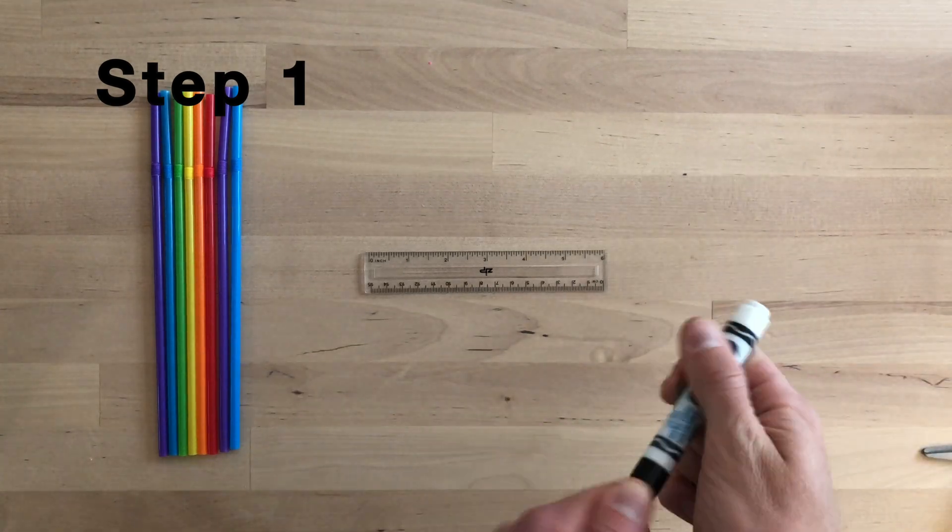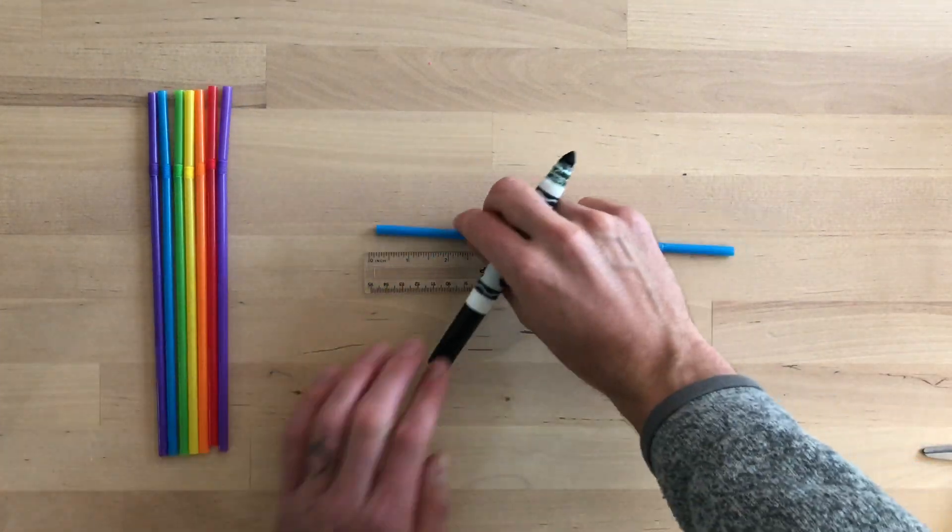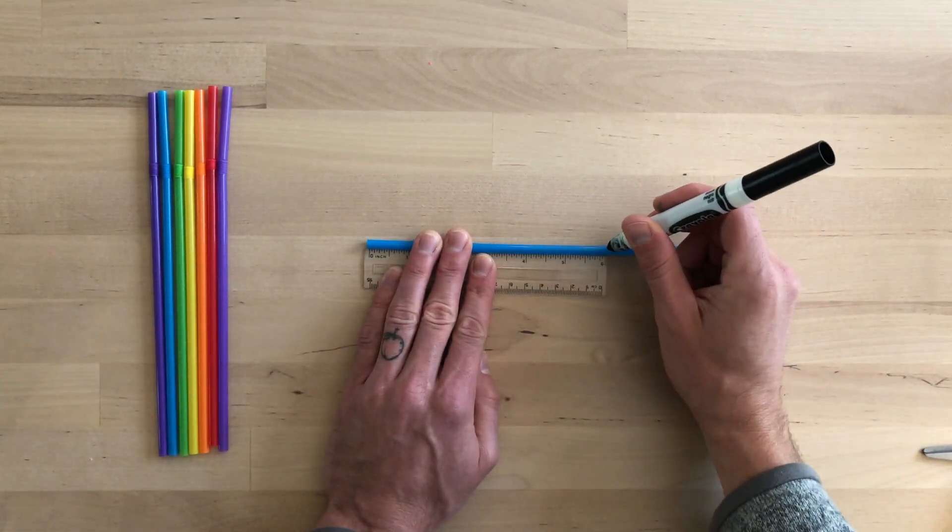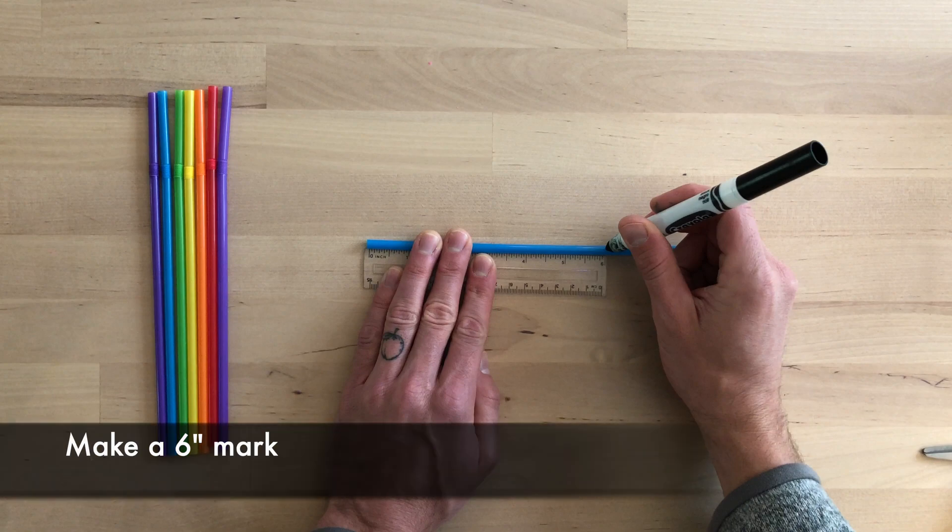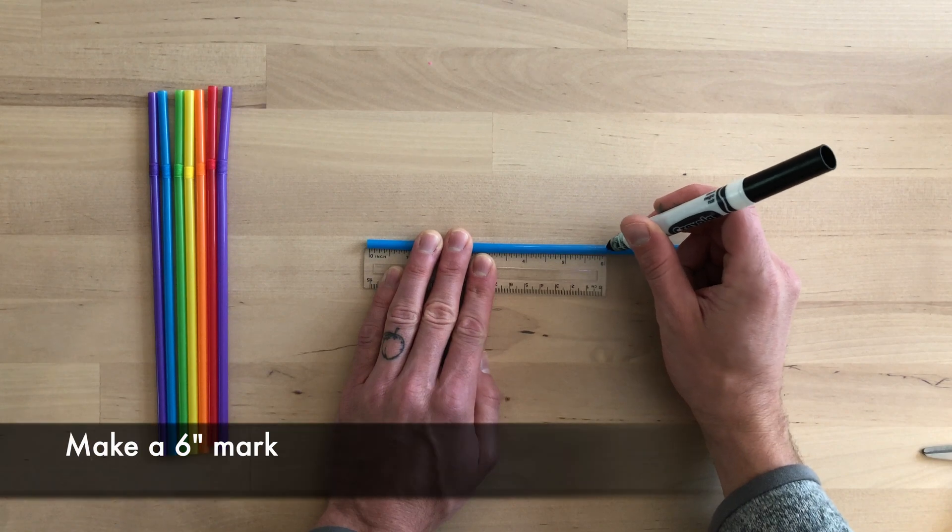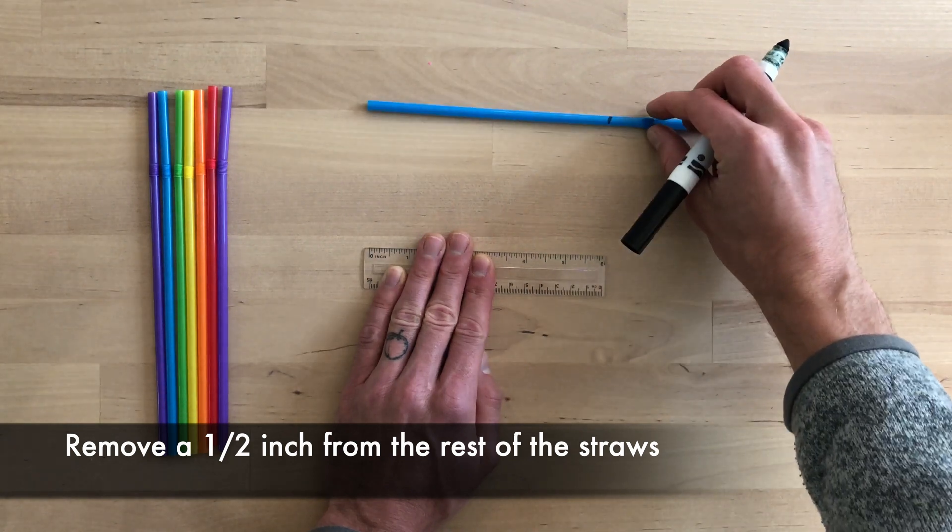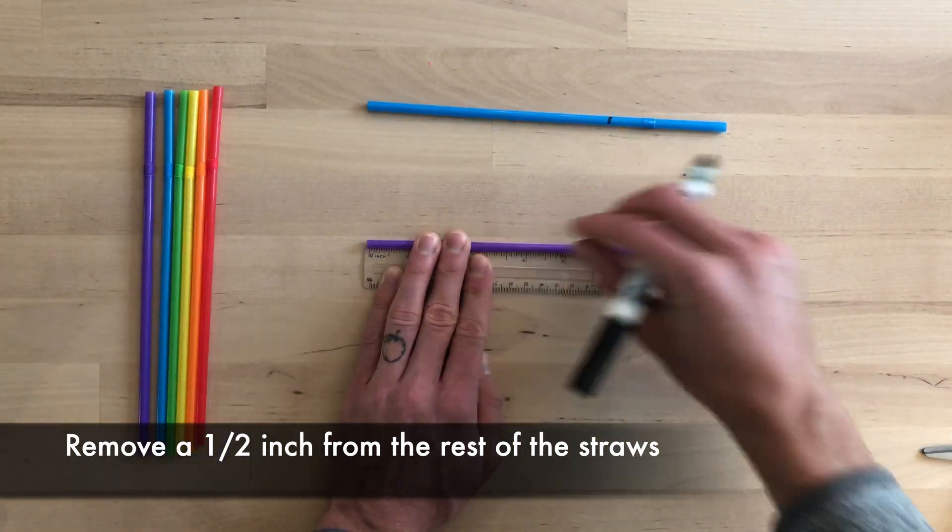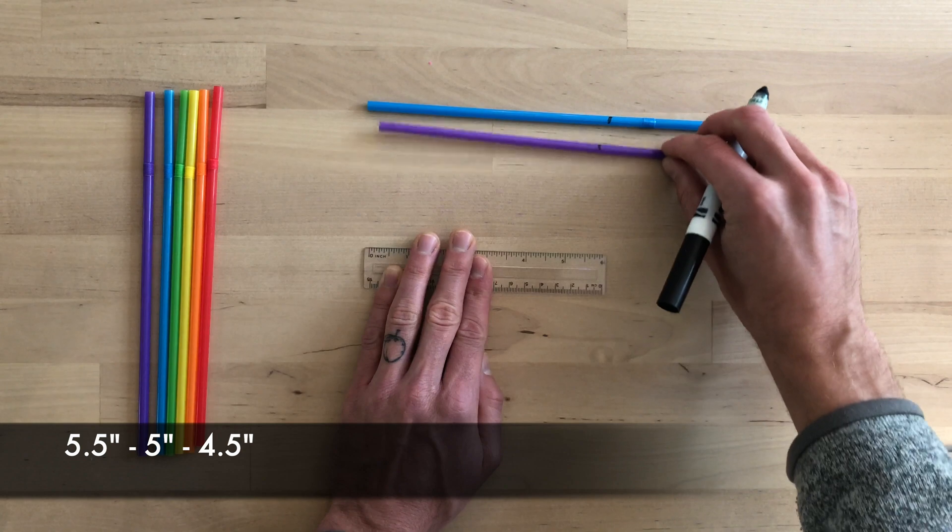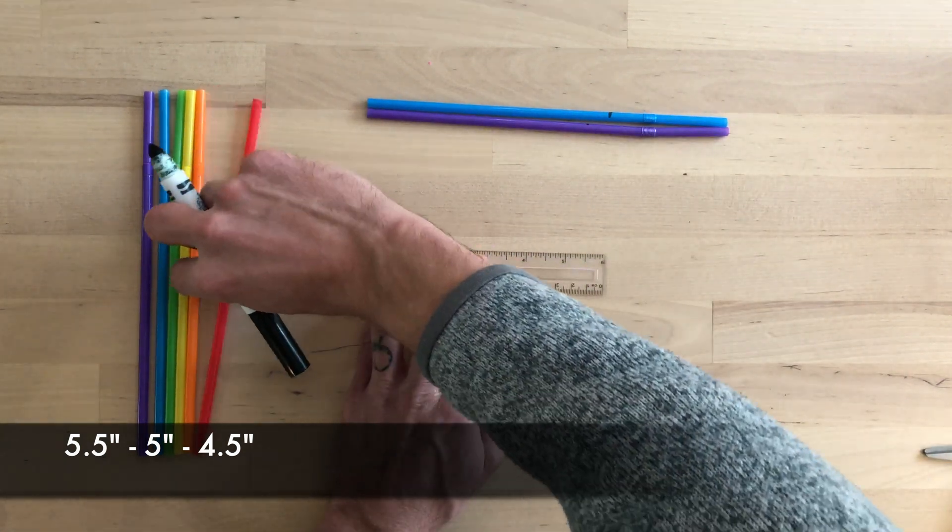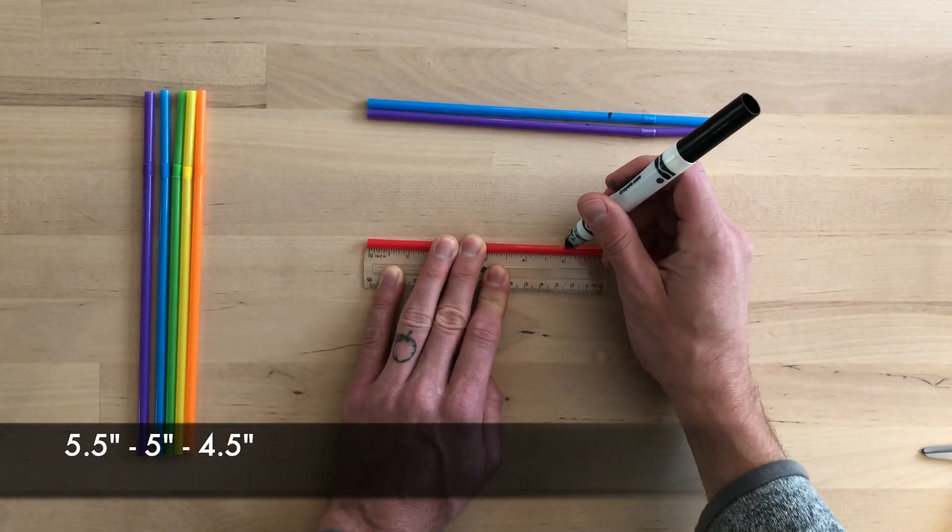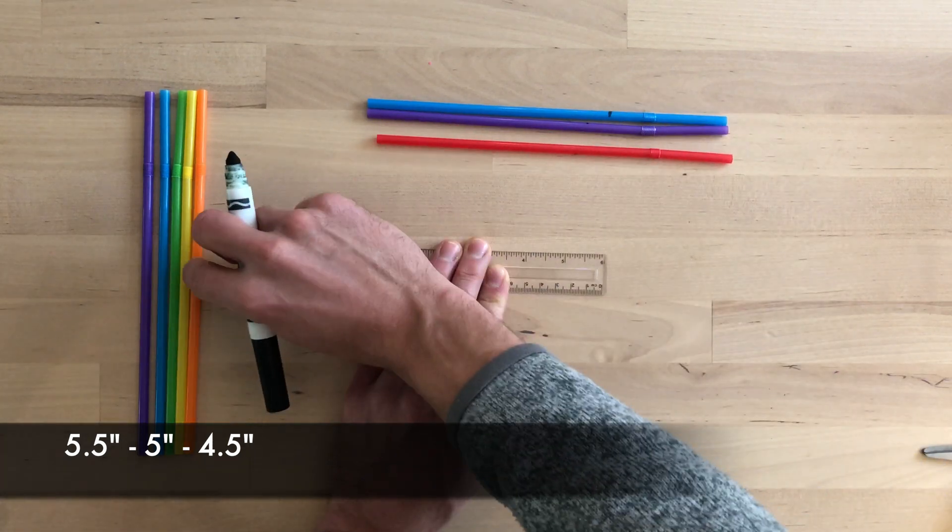Step one. The first thing we need to do is measure our straws. Your first straw is going to be six inches long. So make a mark at six inches on your straw. Now you're going to remove a half inch from the rest of the straws. Your next straws will be five and a half inches, five inches, and four and a half inches.